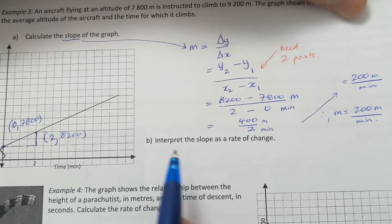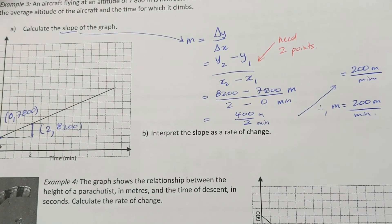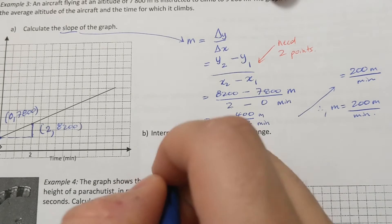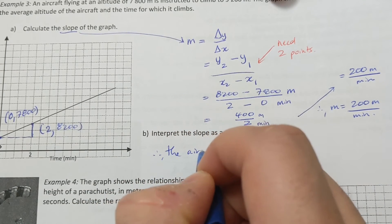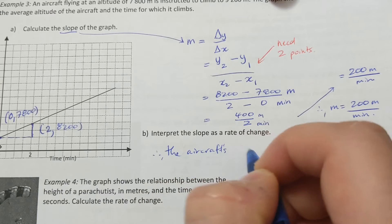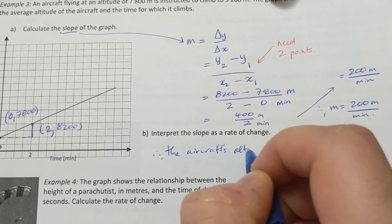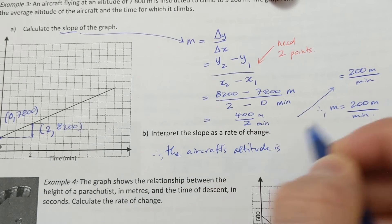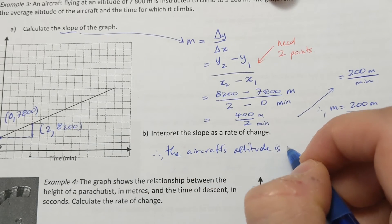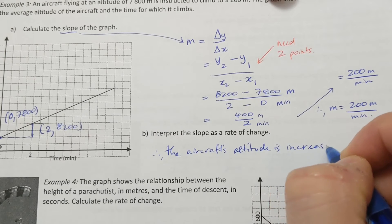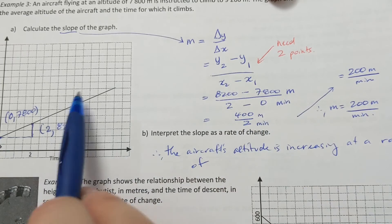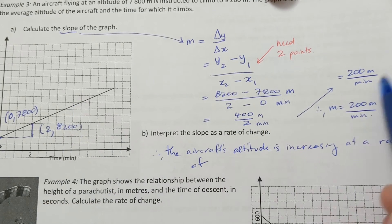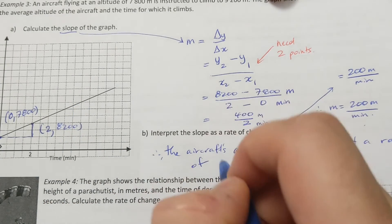The question also asks us to interpret the slope as a rate of change. Therefore, the aircraft's altitude is increasing at a rate of 200 meters per minute.